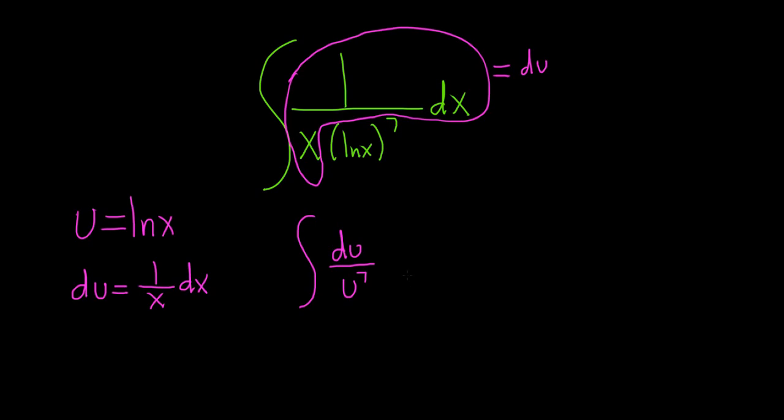Before we integrate this, we should write it as u to a power. So we have to bring the u upstairs. When we do that, the exponent becomes negative. So this is u to the negative 7 du.